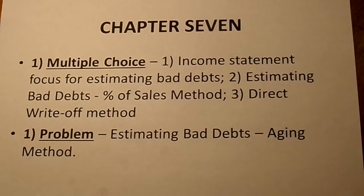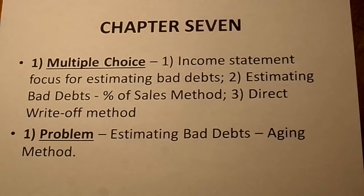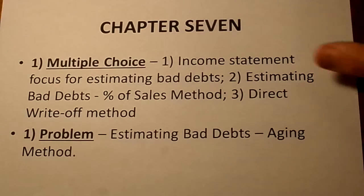There's a problem — one of the 340-point problems on the test from Chapter 7 — and this is estimating bad debts using the aging method.